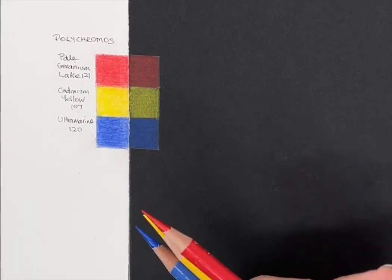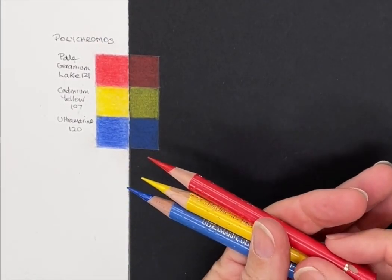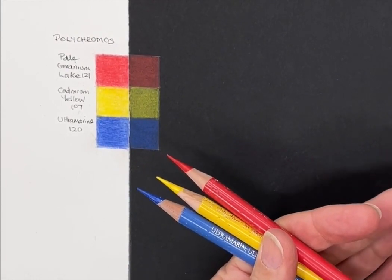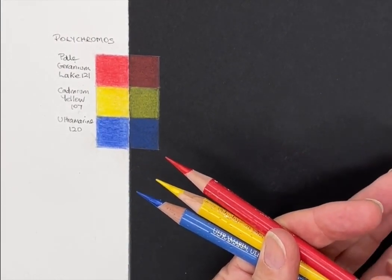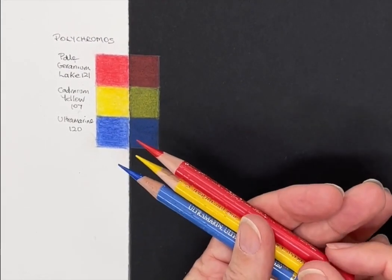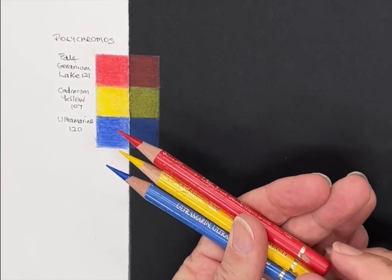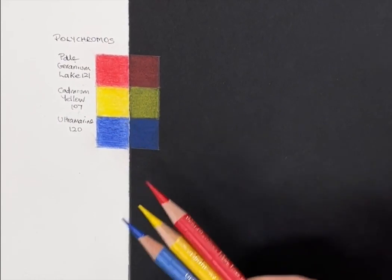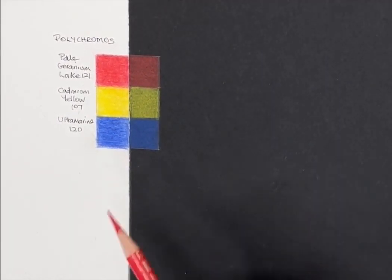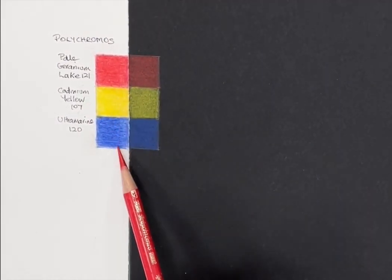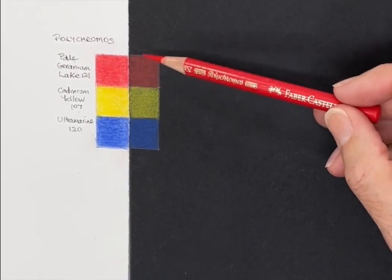One of the first things I'm going to look at is the comparison of using black paper against white paper. Here I've got three Polychromos in our primary colors to show the difference. You can see how bright they are on the white paper.